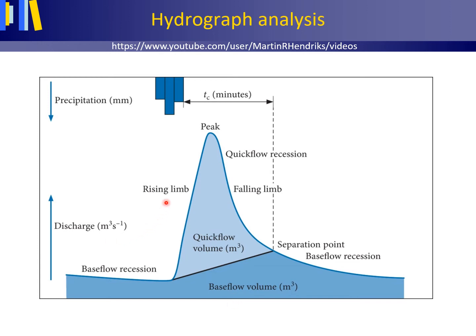The rising limb is part of the hydrograph with increasing discharge before the hydrograph has reached its peak, the peak being the maximum discharge during a precipitation event. The falling limb is part of the hydrograph with decreasing discharge after the hydrograph has reached its peak. The term recession curve is synonymous to the falling limb. The recession curve can be subdivided into a quick flow and base flow recession, and the separation point is the point on the recession curve that separates the quick flow recession from the base flow recession.